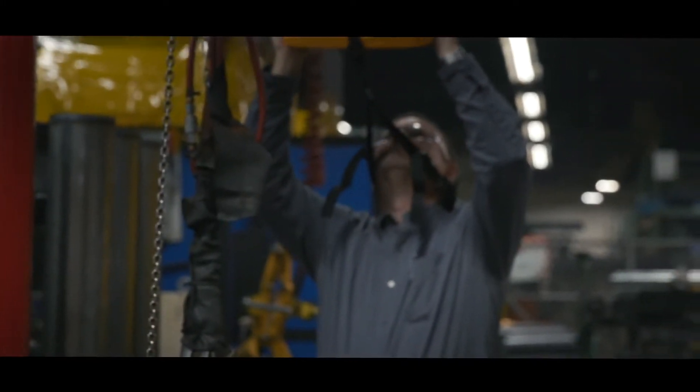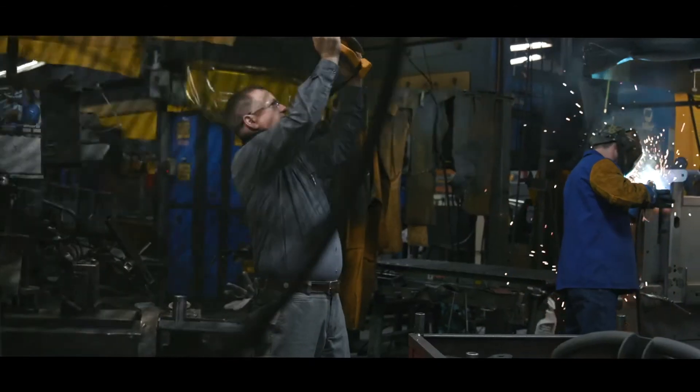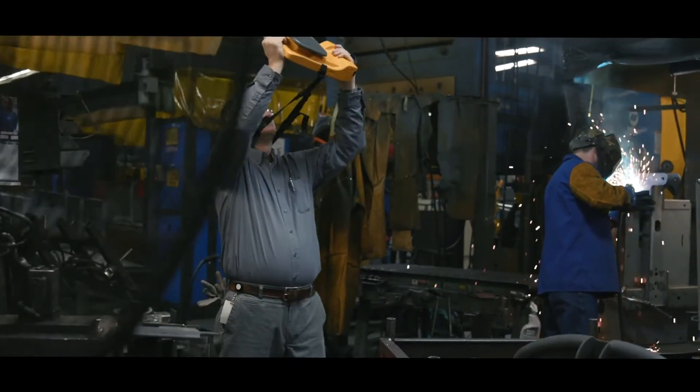The Fluke II900 Sonic Industrial Imager works in noisy places, without having to shut down the line.